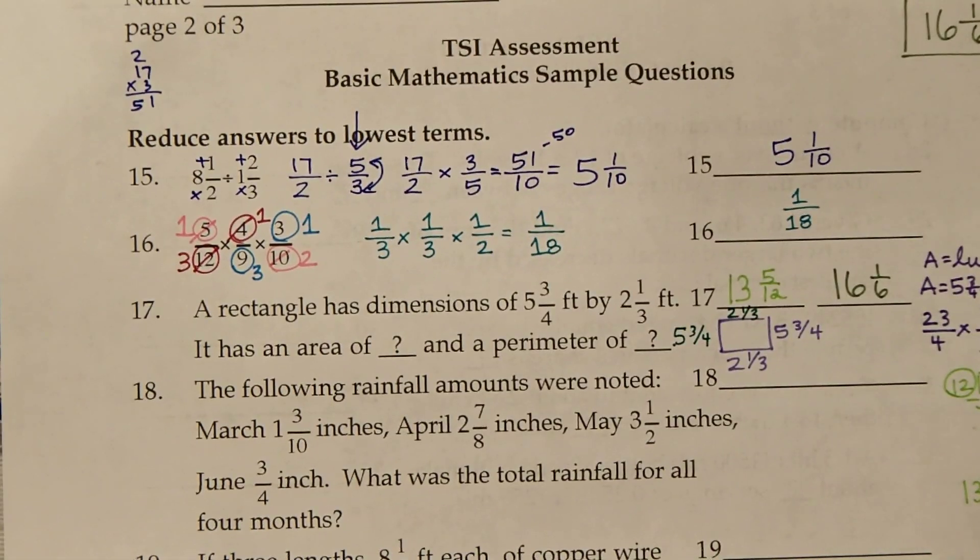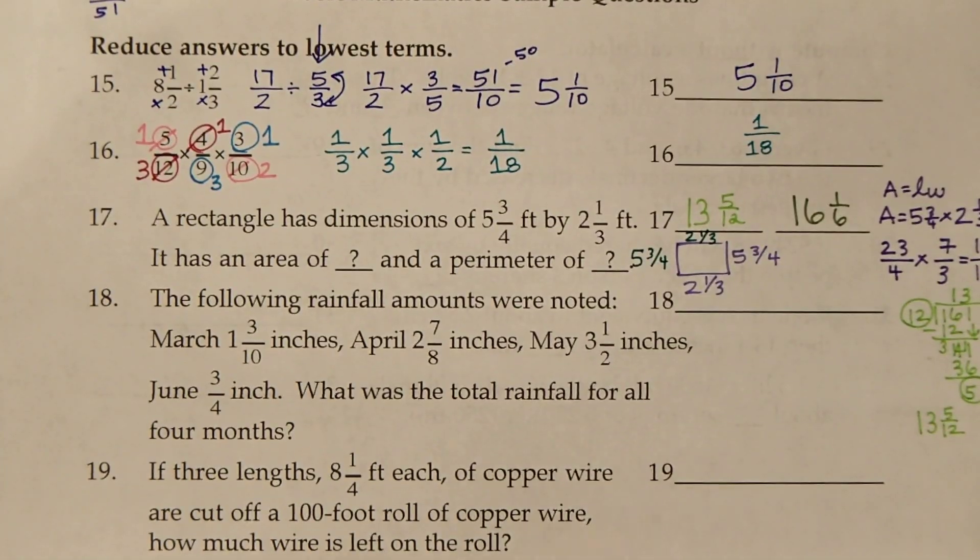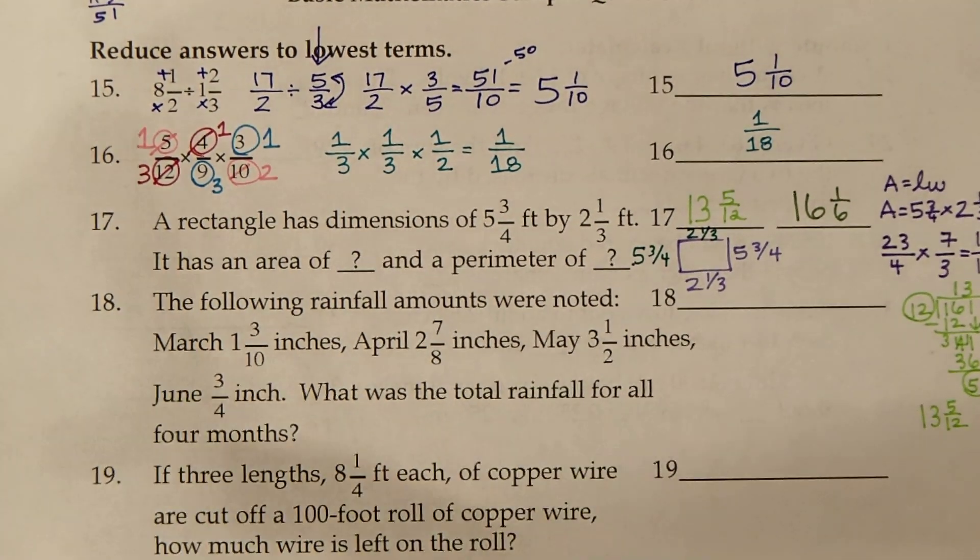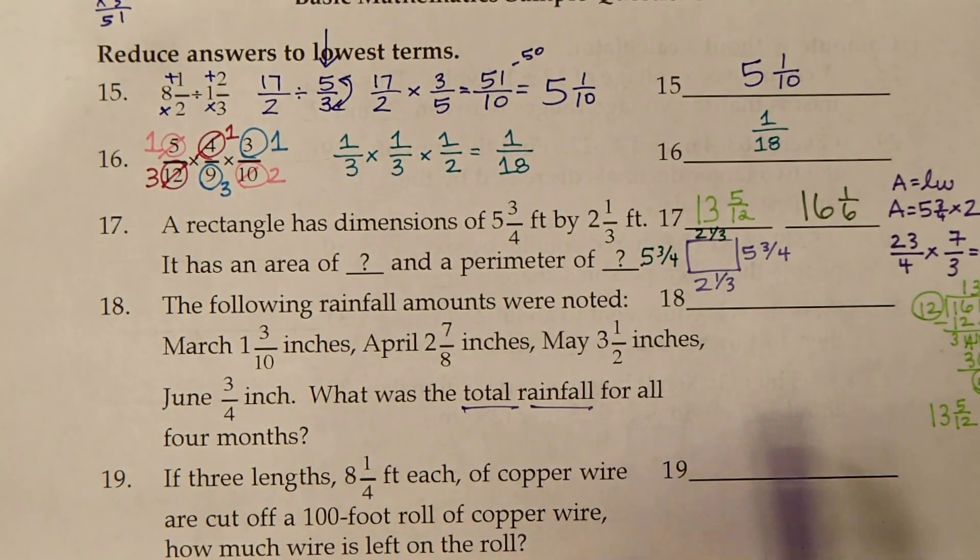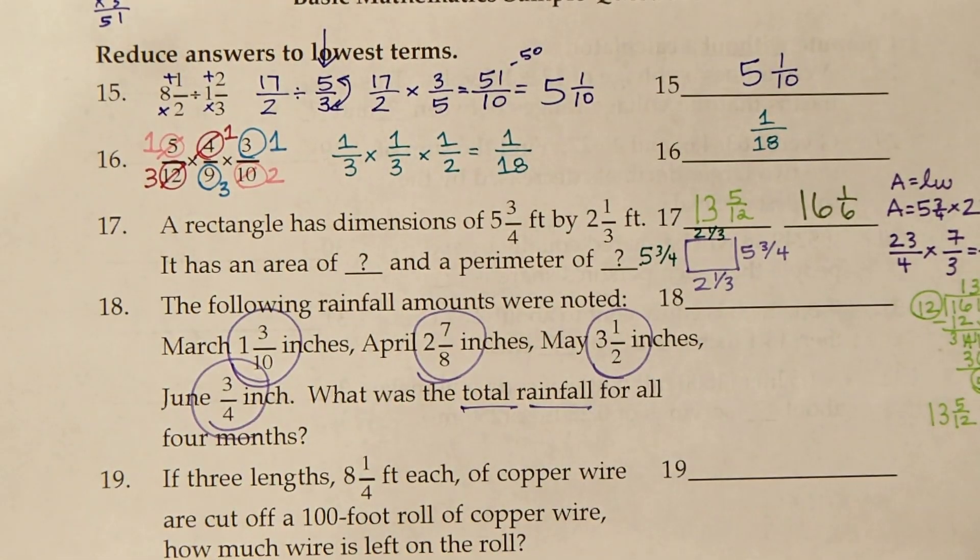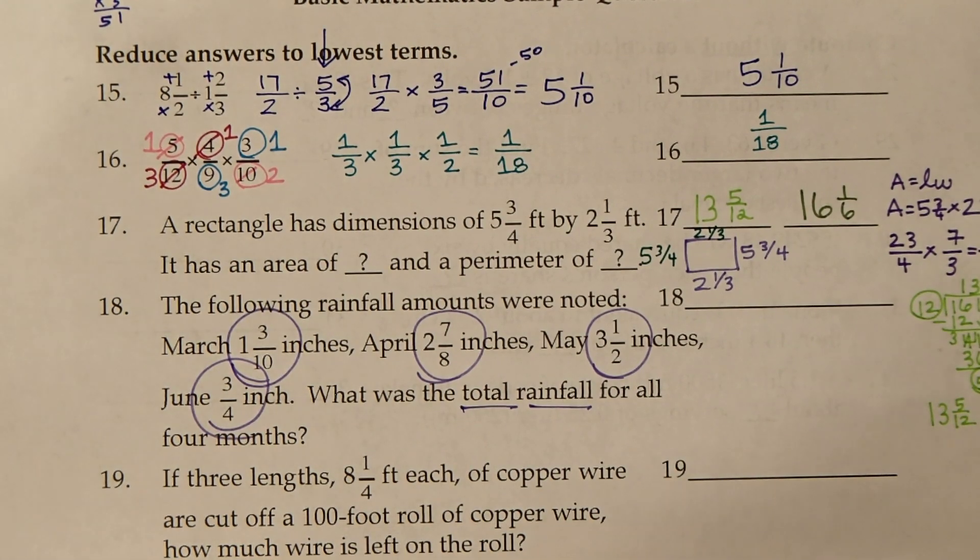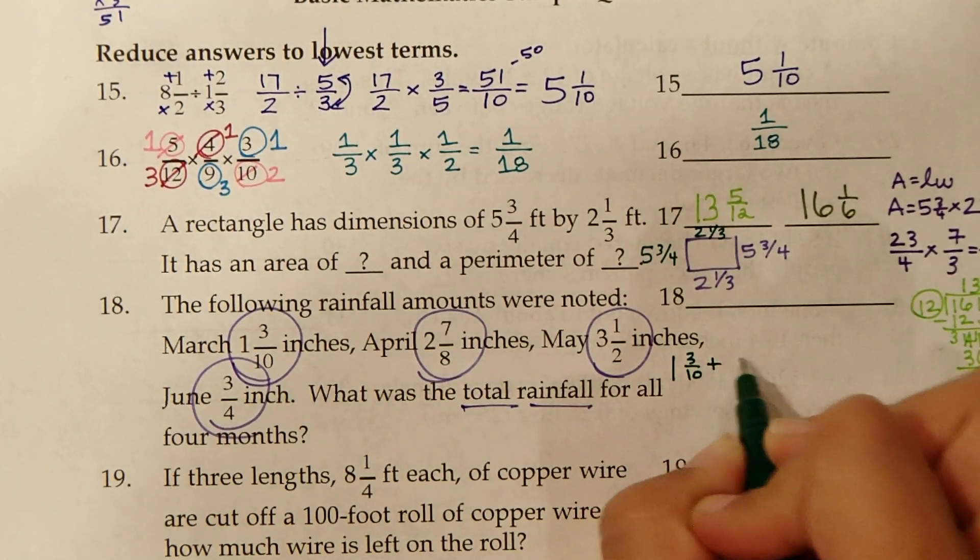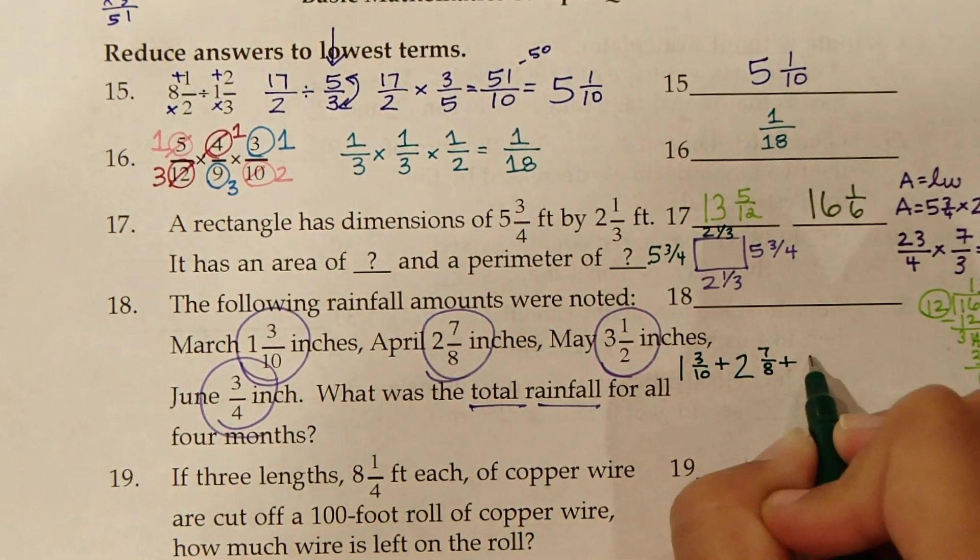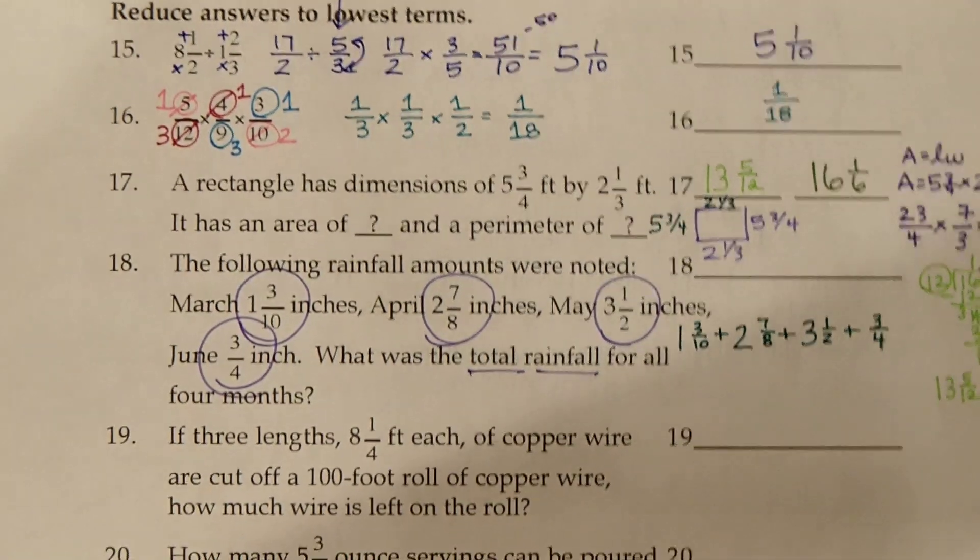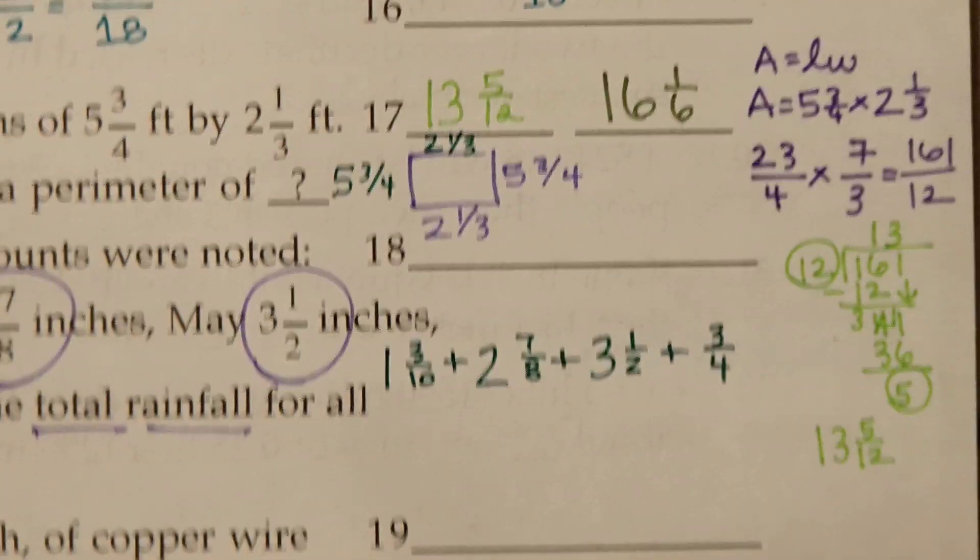Now let's continue with number 18. The following rainfall amounts were noted: March, April, May, June. What was the total rainfall for all four months? So we want total rainfall, which means we're adding all four months. I always circle pertinent information so I don't leave anything out.